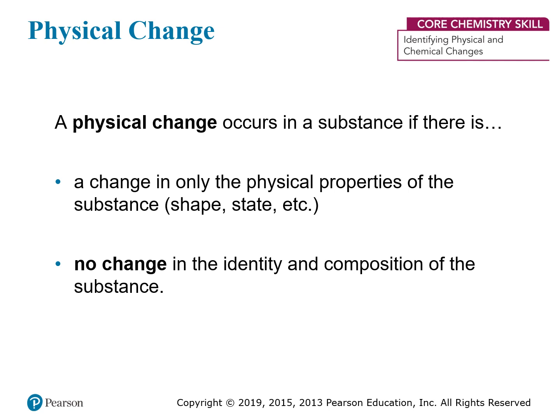A physical change occurs in a substance if one of these physical properties changes, but only the physical properties change — meaning there can't be any change in the identity or composition of the substance. We can cut something, mold something, or even melt or evaporate something, and that'll change the physical properties but won't change the chemical properties. So those are all physical changes.